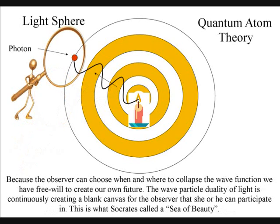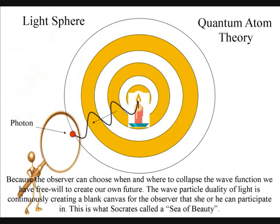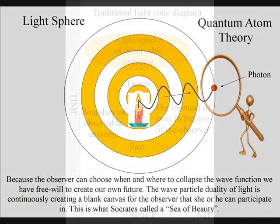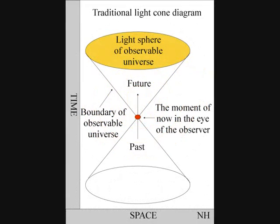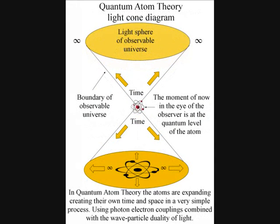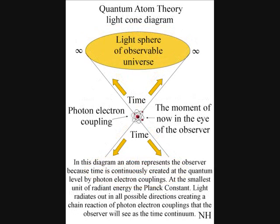Because the observer can choose when and where to collapse the wave function, we have free will to create our own future. In this traditional light cone diagram, there is no understanding of time, but in these diagrams the atom is creating its own time and space in a chain reaction of photon-electron couplings that is called stimulated emissions.